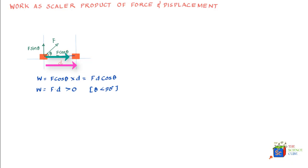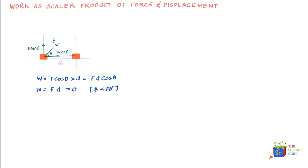Now let's take another situation where the force is acting at an angle greater than 90 degrees with the horizontal. If we again resolve the force into its respective components, the horizontal component is f cos theta dash and the vertical component is f sine theta dash, with the displacement taken as d dash. Once again, f sine theta dash has no role to play in the displacement, but f cos theta dash is what affects the work done.